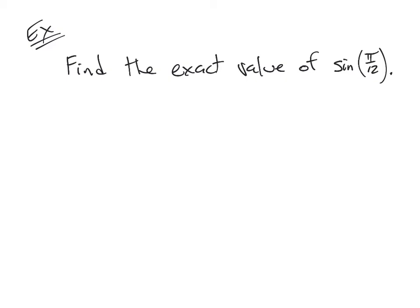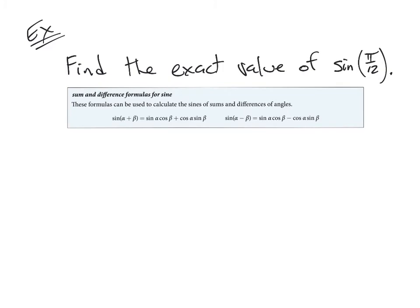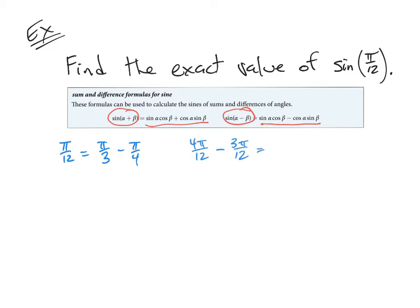To do that, I'll bring the sine formulas back in. What I'm suggesting is: if we can turn pi over 12 into a sum or difference of two values on the unit circle, we can use the formula to translate this into a unit circle problem. I happen to know that pi over 12 equals pi over 3 minus pi over 4. Pi over 3 is 4 pi over 12, and pi over 4 is 3 pi over 12, so when you subtract them, you get pi over 12.